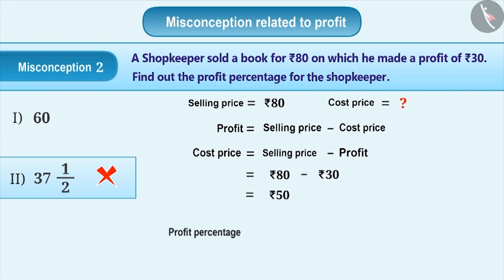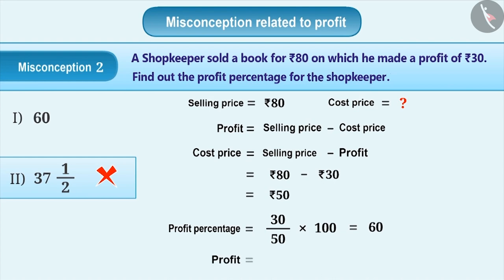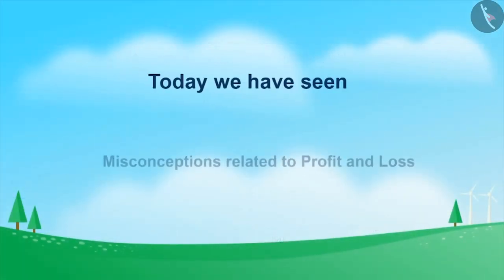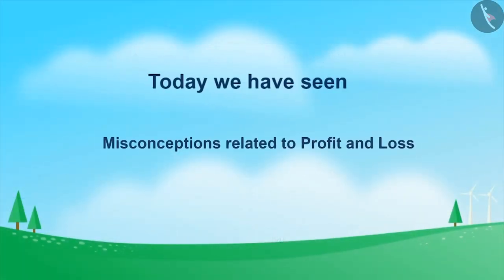Therefore, profit percent is equal to 30/50 into 100, which is equal to 60. This means the profit is 60 percent and the correct answer is option 1. Today we have seen some misconceptions related to profit and loss.